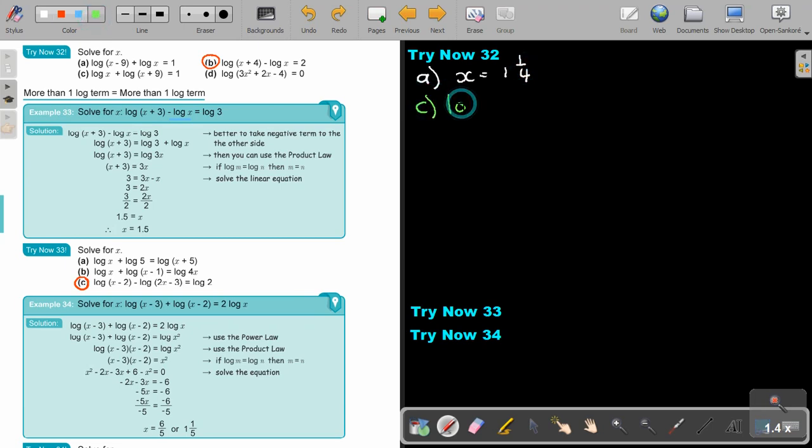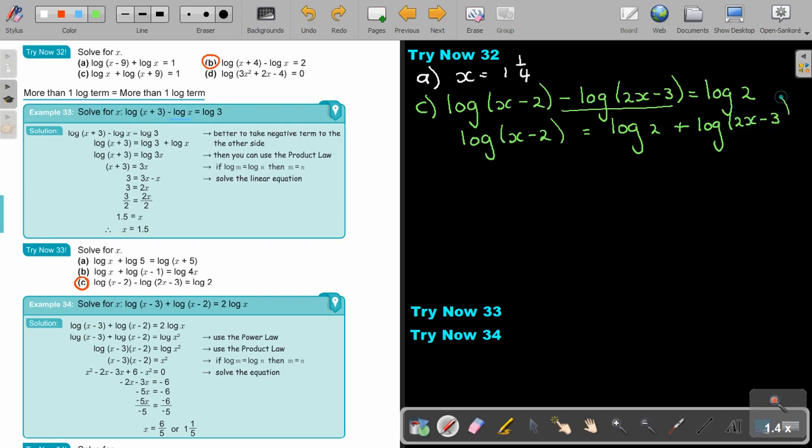So this will be log x minus 2 minus log 2x minus 3 equals log 2. Now, I'm going to take this over. So it's going to be log x minus 2 is equal to log 2 plus log 2x minus 3. So that's going to give me log x minus 2 equals log 2 times 2x minus 3. And now I say x minus 2 equals 2 times 2x minus 3.